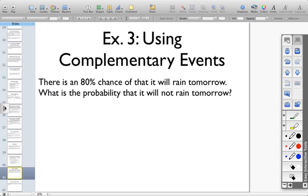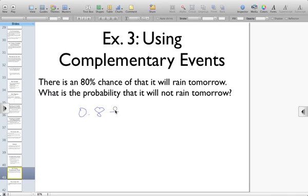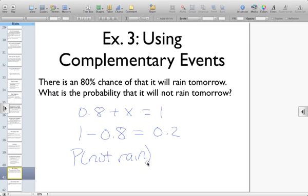80% plus something equals 100%. Algebraically, you can make it look like this, or you can just say 1 minus 8 tenths would equal 2 tenths. So the probability that it's not going to rain is going to be equal to 20%, or 2 tenths, or 1 fifth. The probability that it's either going to rain or not rain is 100%. It's going to do one or the other.